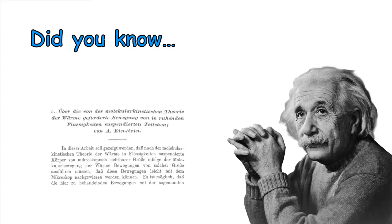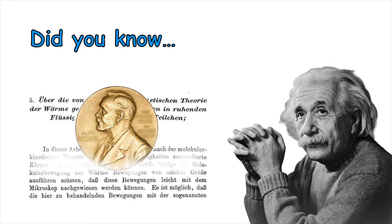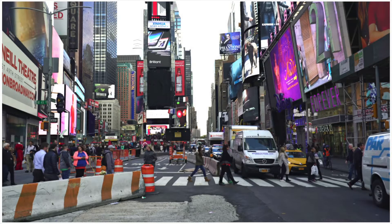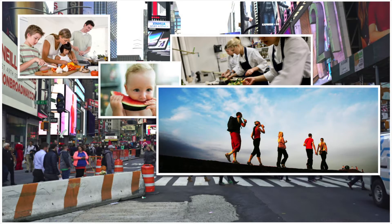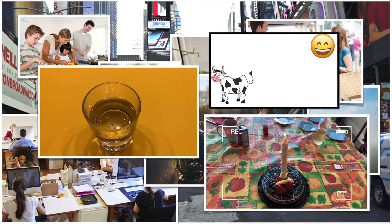On a side note, did you know that Albert Einstein published a paper about Brownian motion as the third of three famous papers in 1905, and was awarded the Nobel Prize in 1921 in part for this?